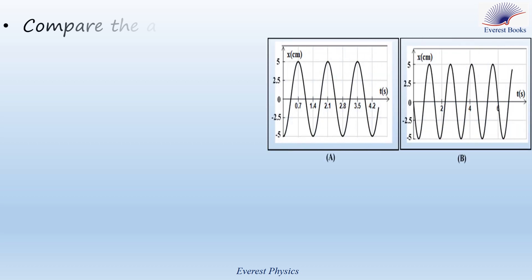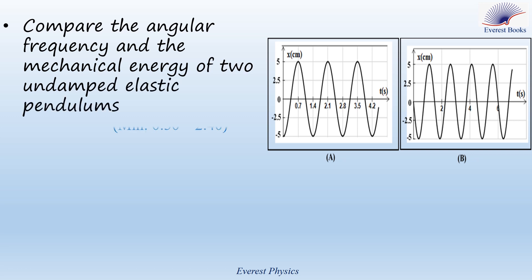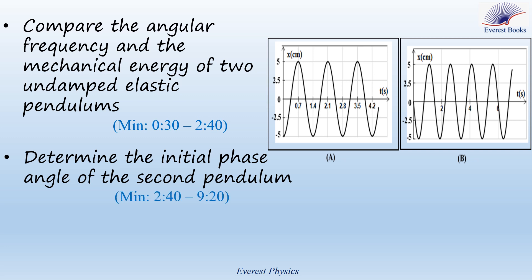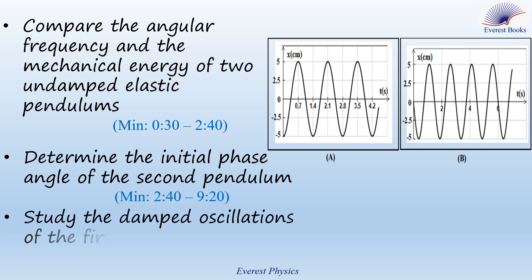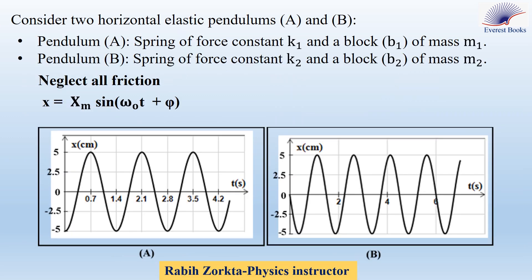In this problem, we are going to compare the angular frequency and the mechanical energy of two undamped elastic pendulums, determine the initial phase angle of the second pendulum, and study the damped oscillations of the first pendulum. Consider two horizontal elastic pendulums A and B. Pendulum A consists of a spring of force constant K1 and a block B1 of mass M1, while pendulum B consists of a spring of force constant K2 and a block B2 of mass M2. Neglect all friction.